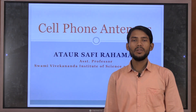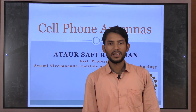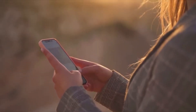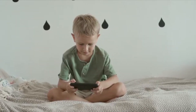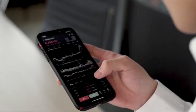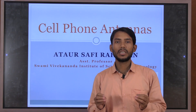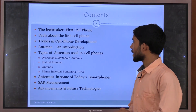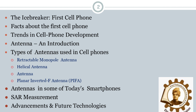Dear students, today we will discuss cell phone antennas — the various types of antennas applicable in cell phone devices. We will quickly see the various types of cell phone antennas, their applications, advantages, and disadvantages, and how the antenna is used in various types of cell phones. Today we will discuss basic content: the icebreaker, the first cell phone, facts about it, trends in cell phone development, antenna introduction, and types of antennas used in cell phones — retractable monopole antenna, helical antenna, and planar antenna.